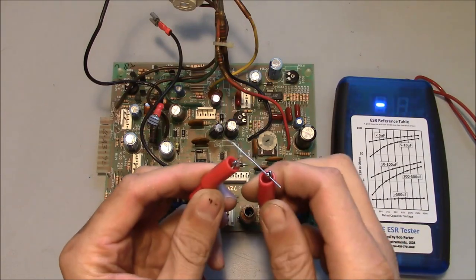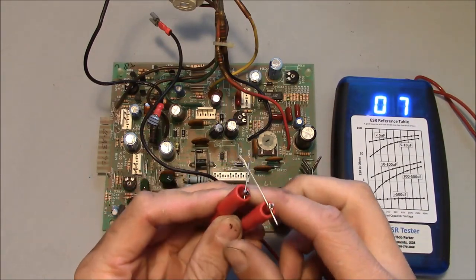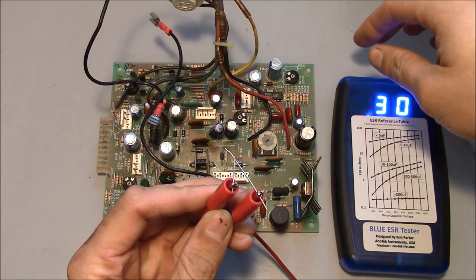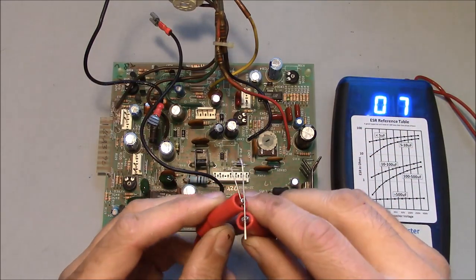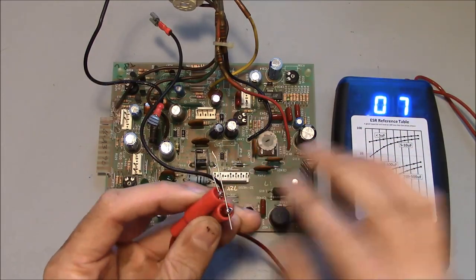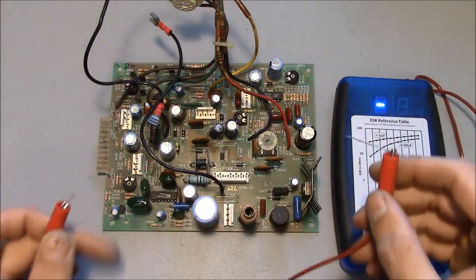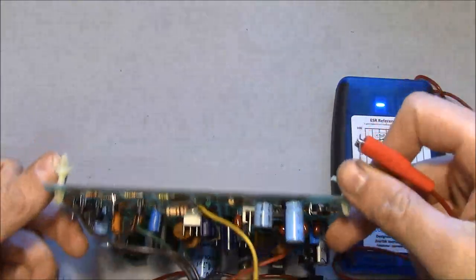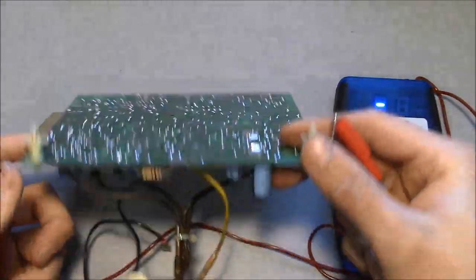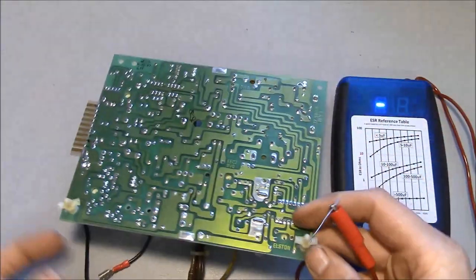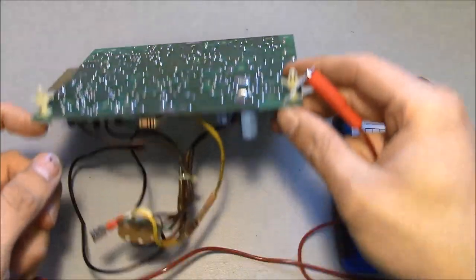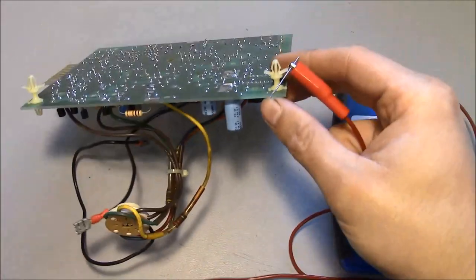So you turn the meter on. You have to calibrate the leads. So you just short the leads together. Hit the button again. Now we're zeroed out. And you can go ahead and test the capacitors. You can actually test them in circuit although sometimes I have found that it doesn't work that well. And you actually have to take them out of the circuit to get a reliable reading.